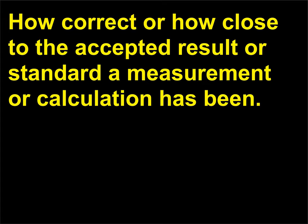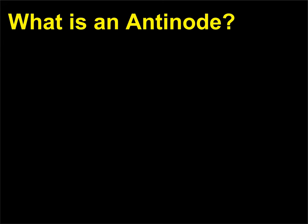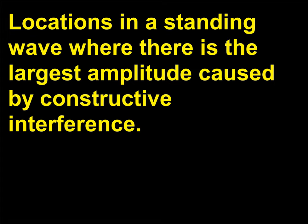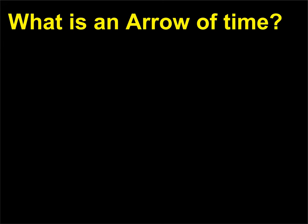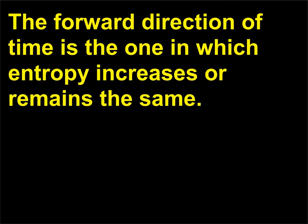What is accuracy? It describes how correct, or how close to the accepted result or standard, a measurement or calculation has been. What is an anti-node? Locations in a standing wave where there is the largest amplitude, caused by constructive interference. What is the arrow of time? The forward direction of time is the one in which entropy increases or remains the same.